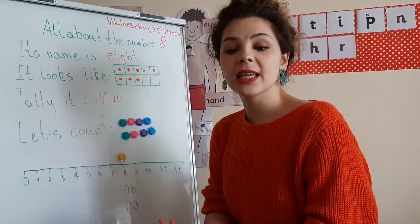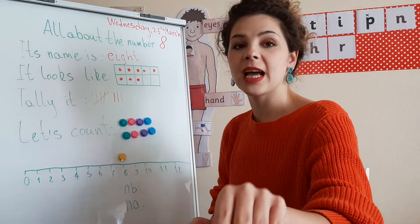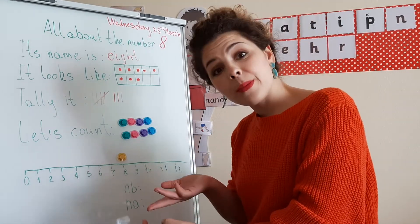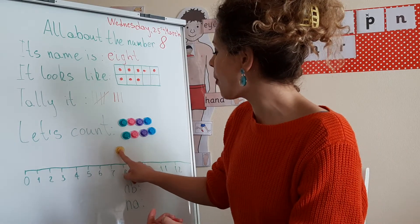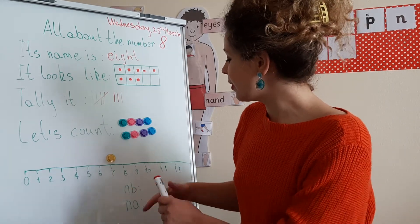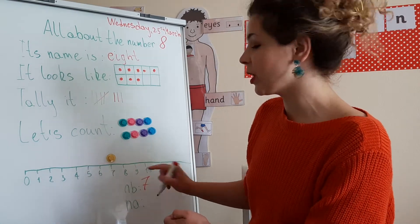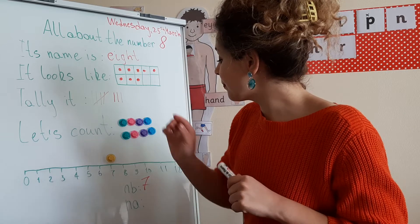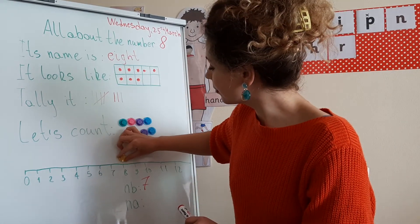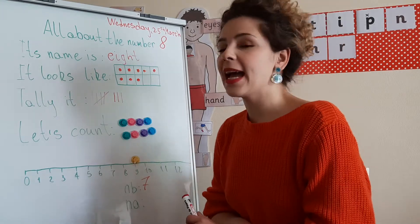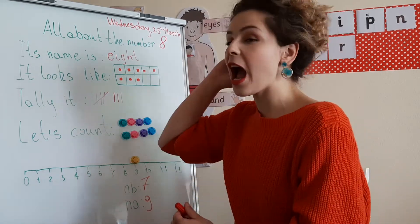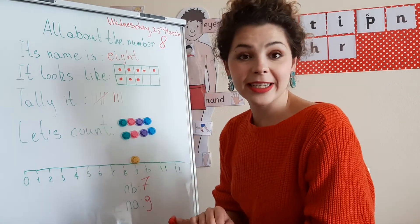Here's the digit on the number line. We need to figure out the number before and the number after. The number before is the number we learned yesterday — we make one hop back from eight and we land at number seven. So the number before eight is seven. Then we make a hop forward and we land at number nine. So the number after eight is nine — and that's a little sneak peek at what we might be doing tomorrow!